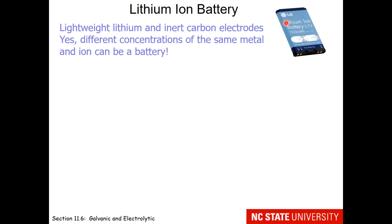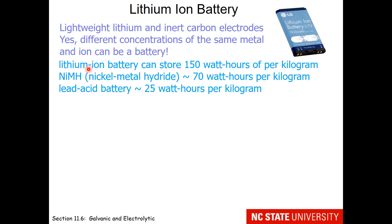Nowadays, battery design is a lot more sophisticated. You're probably familiar with the lithium ion battery — this involves lightweight lithium ions, inert carbon electrodes, and different concentrations of lithium ions. The amount of power a battery can generate compared to its mass is very important. You couldn't have a drone with a lead acid battery because that only provides 25 watt hours per kilogram. You have a better shot using a nickel metal hydride battery, but look what a lithium ion battery does for us — six times the power for the amount of mass.